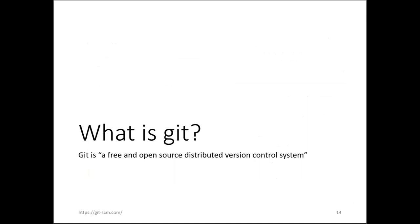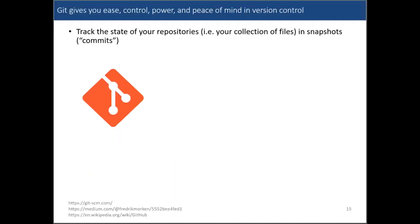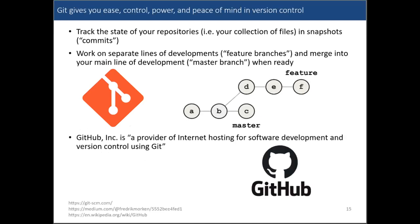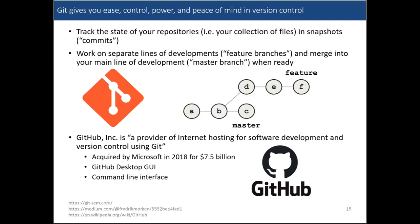So what is Git? It's a free and open source distributed version control system. Git's name supposedly comes from the idea that any git or fool can use it — in other words, it's supposed to make version control easier, and it also has a ton of advanced functionality. Git lets you track the state of your repositories in snapshots called commits. You can work on separate lines of development called feature branches, and merge these back into your main line of development or master branch when you're ready. We also have GitHub, which is a large company that hosts software with basic plans for free. Microsoft acquired it in 2018 for almost eight billion dollars. There's a desktop GUI and a command line interface.